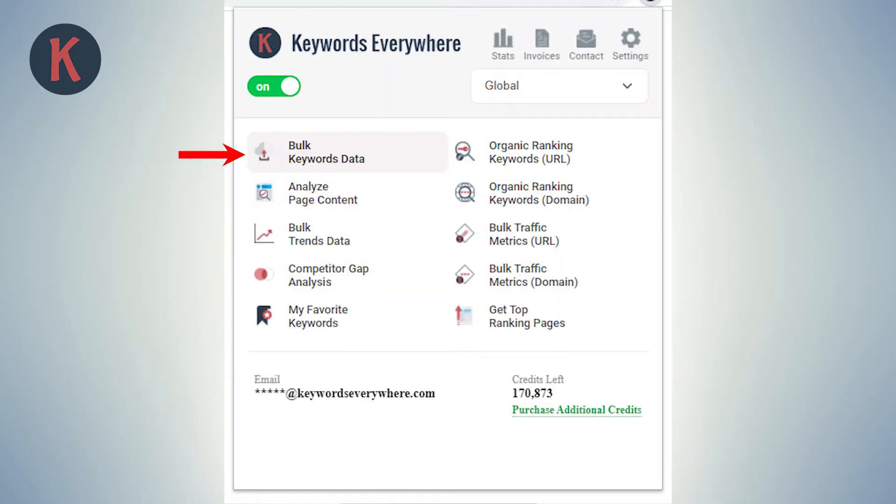The bulk keywords data functionality can be found in the pop-up menu and it is used to quickly get the search volume, CPC, competition, and the 12-month trend data for thousands of keywords.